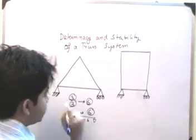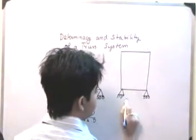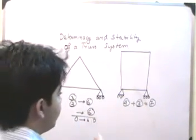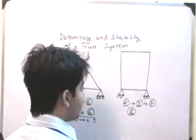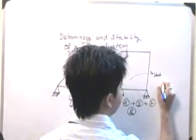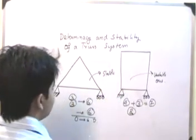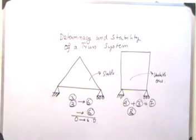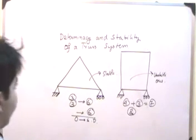That means six unknowns minus six equations equals zero — this is a statically determinate structure. Now consider a structure with four members plus three restraints, giving seven unknowns, but four nodes provide eight equations of equilibrium. Since the number of unknowns is less than the number of equations, this structure is unstable. A basic stable truss is a triangulated structure built of three members, hinge-connected and roller-connected.